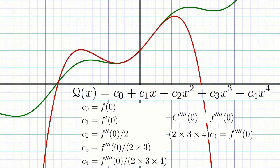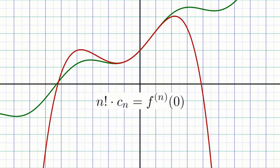At this point, you might be seeing the pattern emerging. The n-th coefficient c sub n of a polynomial approximation always obeys the equation n factorial times c sub n equals the n-th derivative of f at 0. And solving for c sub n gives us the n-th derivative of f at 0 over n factorial.